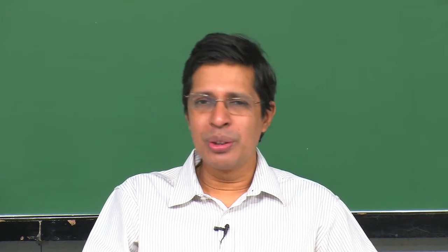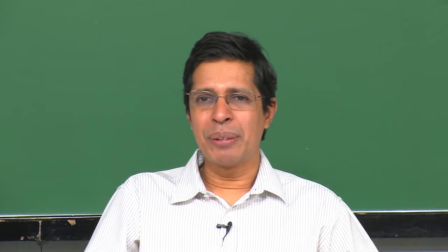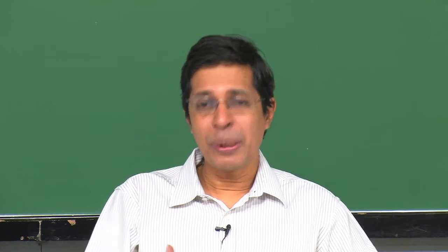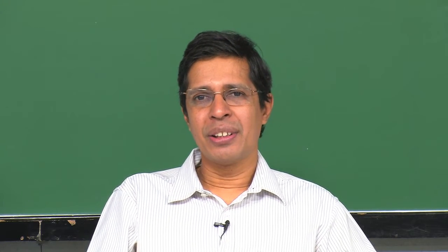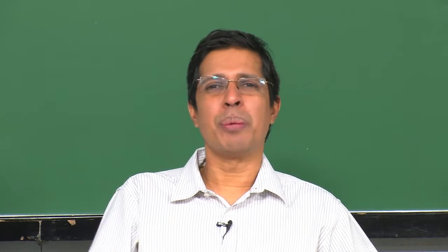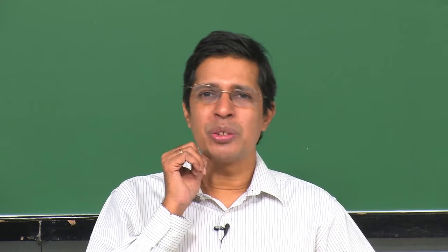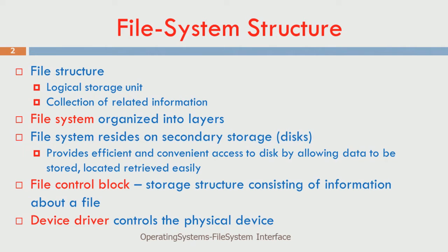Why do we move it to main memory? Main memory is much faster than secondary memory. To enhance the speed of file system operations, some crucial parts of the disk - hard disk - which we will discuss as we proceed, are brought into main memory. There is something called a file control block which has information about the file, and for every file we will have a file control block. There is also the device driver which has to work along with the file system - your USB or whatever - taking care of movement of data from CPU/RAM to disk and back.